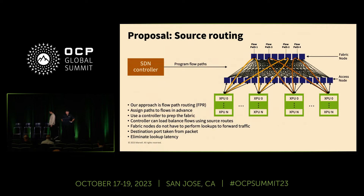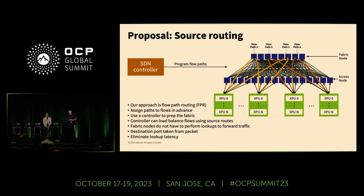This is an alternative approach. There is a mapping function that takes pieces of your workload and maps it to certain compute elements in your infrastructure. Our approach is to piggyback on that. Assuming there is a controller or a mapper, there will be a way for us to pre-program the traffic flows in the fabric from point A to point B. We're calling this flow path routing or source routing. The idea is to assign the paths to the flows in advance before you actually start your workload, pre-program your fabric, then use the controller to prep the fabric, install all the routes and paths into your fabric as an initial step.